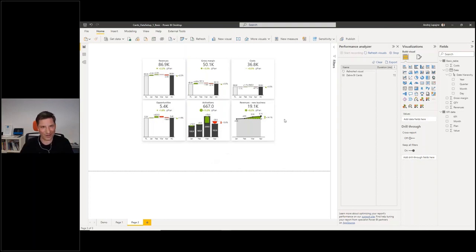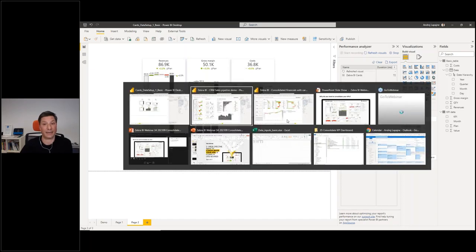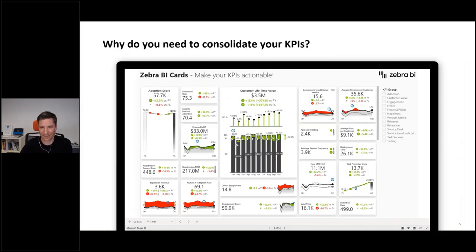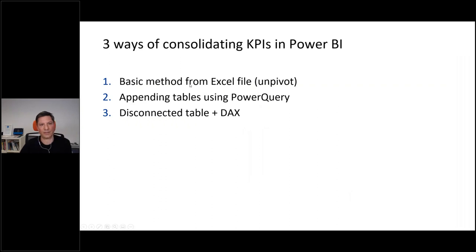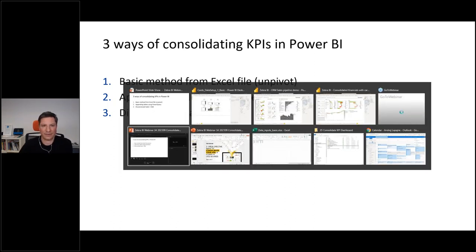That's why we're doing this webinar. Now let me show you the three ways of how you can consolidate those KPIs. We'll start with a simple example from Excel, then move on to Power Query, and at the end handle the DAX tricks that'll help you do that. Let's start with Excel.